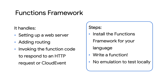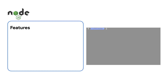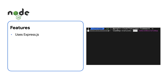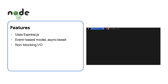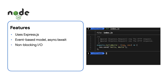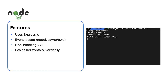You don't need to emulate your function when testing locally. The Node Functions Framework uses Express.js under the hood, adopts Node's event-based model that's asynchronous, has non-blocking I/O, and supports promises for handling requests. It's an excellent choice for scaling apps both horizontally and vertically.